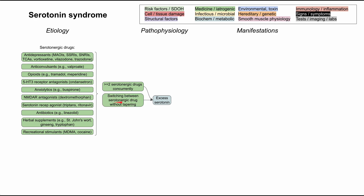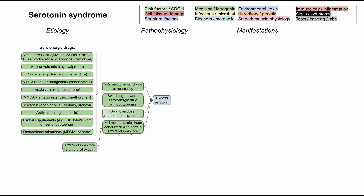Switching between serotonergic drugs can precipitate serotonin syndrome if you don't allow time for tapering. So if a patient is switching from an SSRI to an SNRI, you need to slowly taper between those medications. Drug overdose, whether intentional or accidental, can also precipitate serotonin syndrome. And taking at least one serotonergic drug with a CYP450 inhibitor can also cause serotonin syndrome.